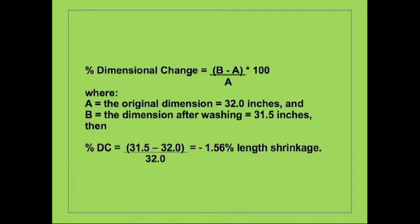If the final measurement is smaller than the original measurement, this results in a negative dimensional change, which is shrinkage. A final measurement larger than the original measurement results in a positive dimensional change, which is growth. In this example, the original inseam length was 32 inches and the length after laundering measures 31.5 inches. This calculates to a length shrinkage of 1.56 percent.